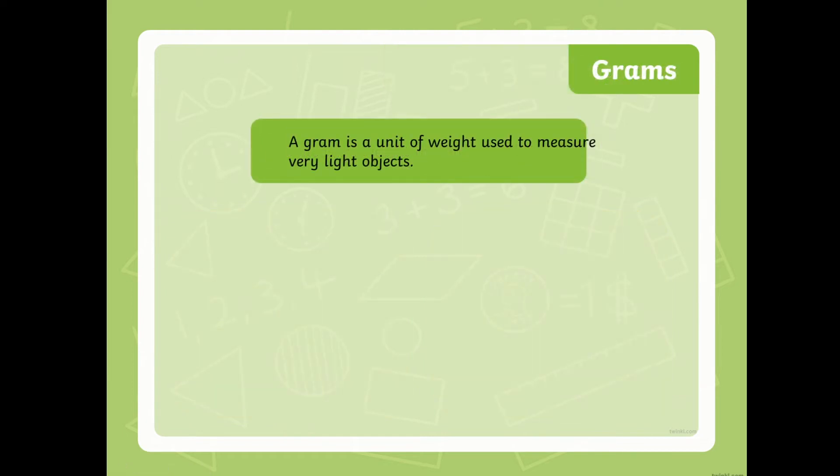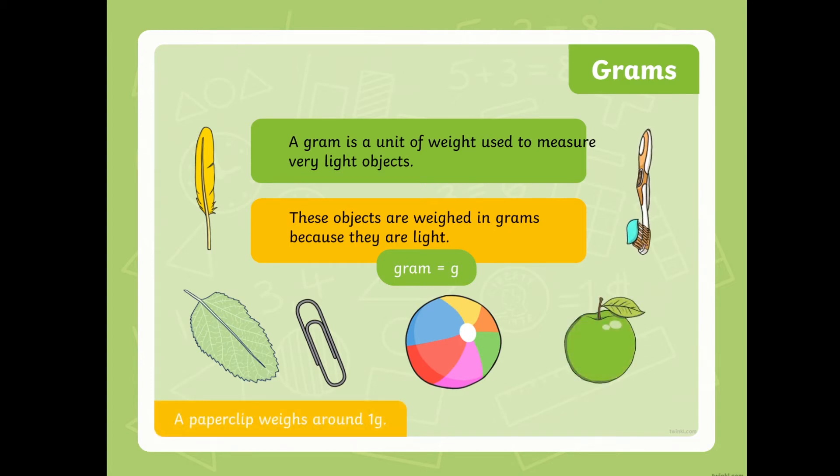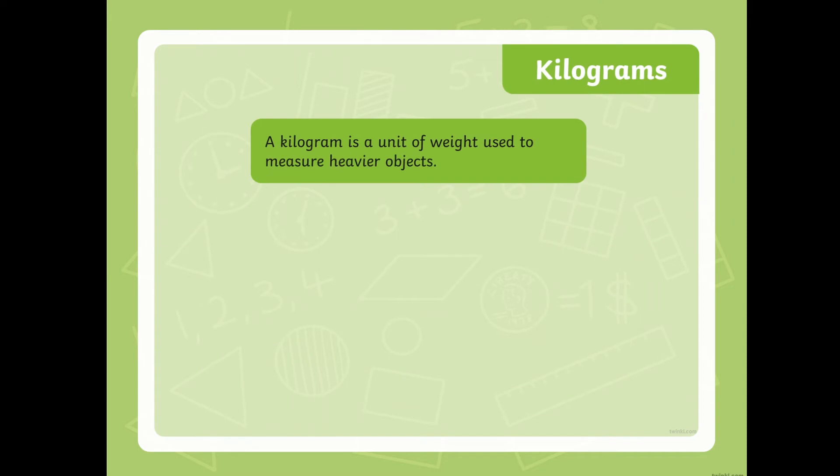A gram is a unit of weight which is used to measure very light objects. These objects are weighed in grams because they are light. Gram is equal to G. So, this is the short form. These are some examples of light materials in which we can use grams as our unit. A paper clip weighs around one gram. Next, we have kilograms.